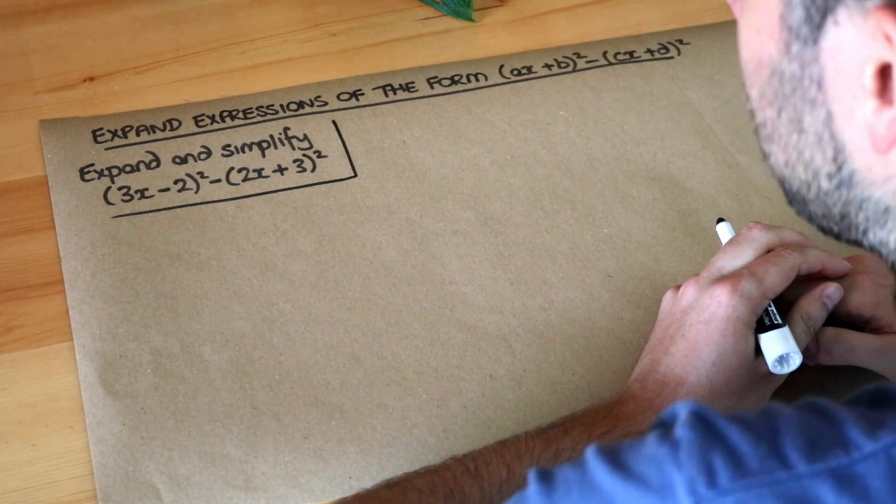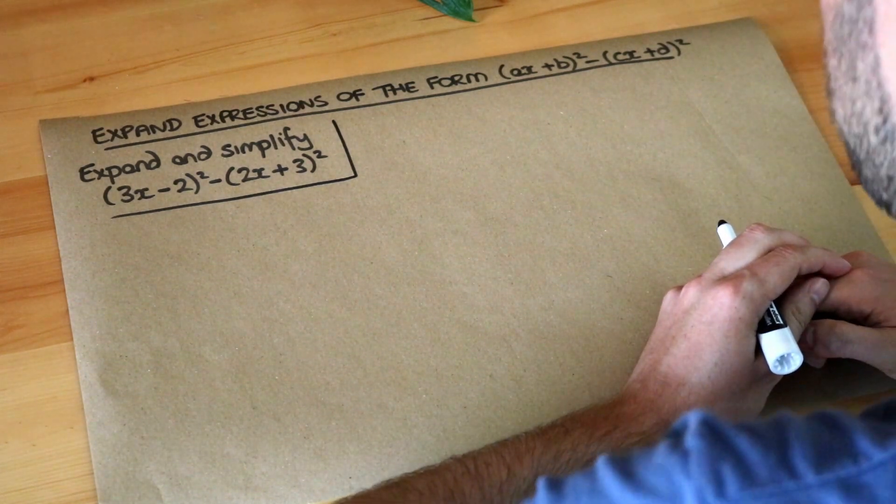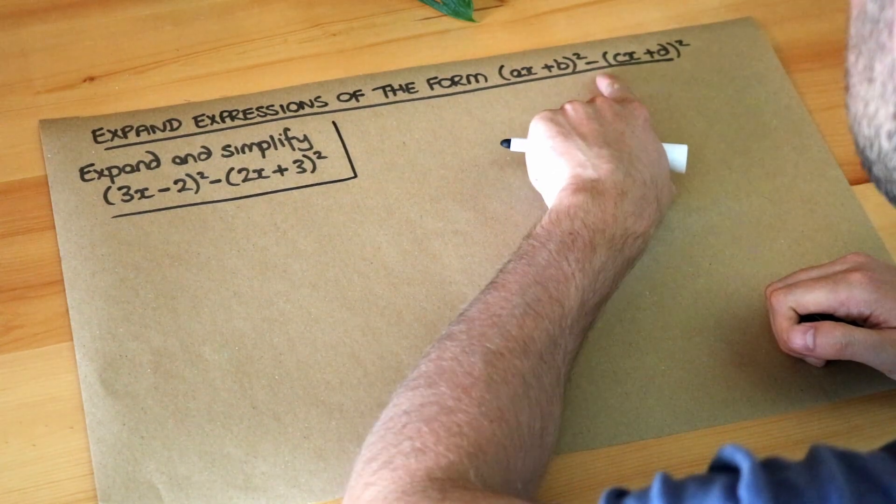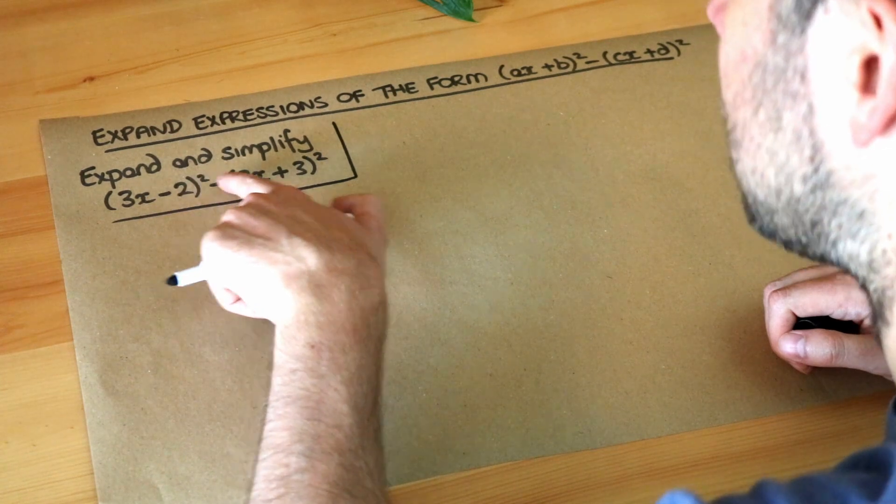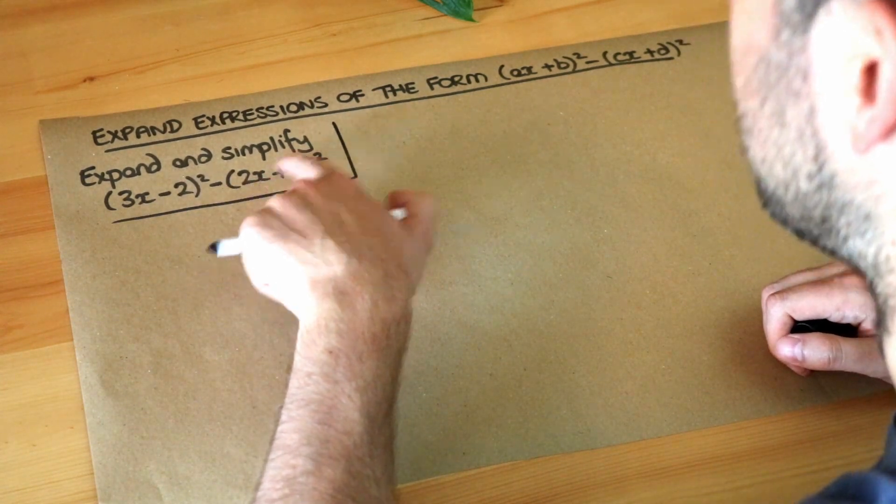Hello and welcome to this Dr Frost video on expanding expressions of the form (ax+b)² - (cx+d)². So we want to do (3x-2)² and subtract (2x+3)².